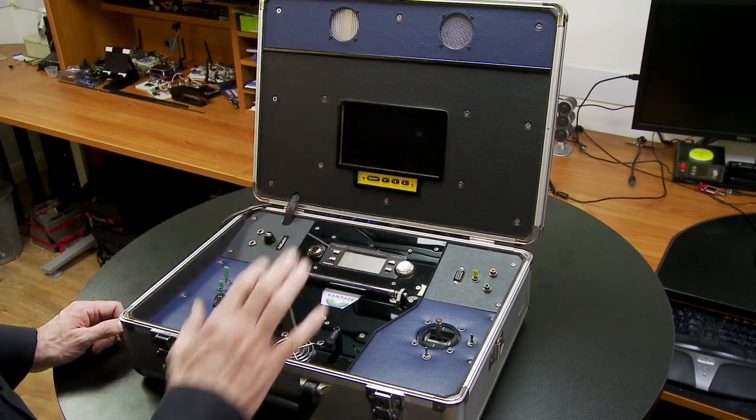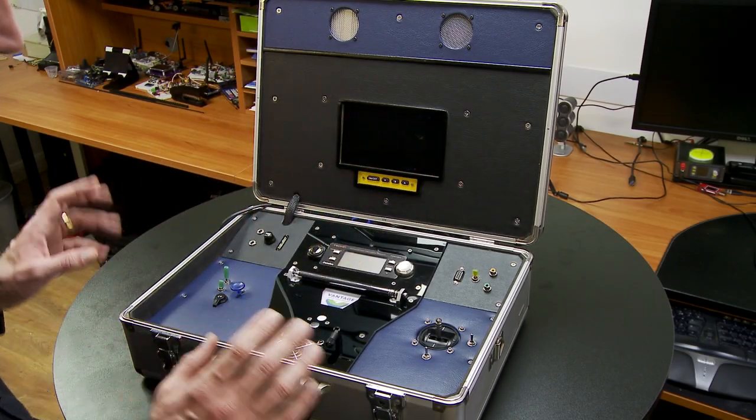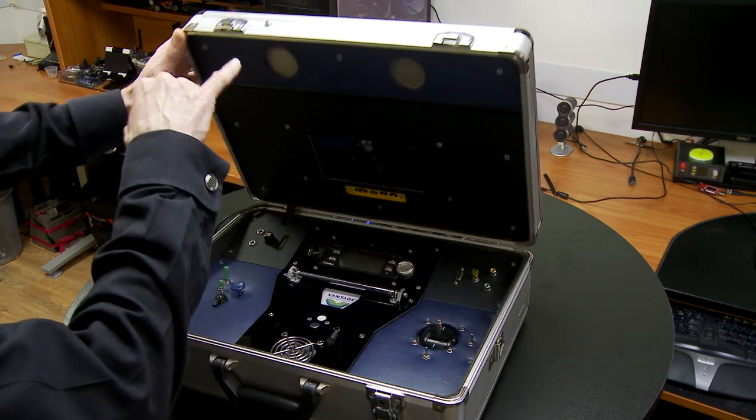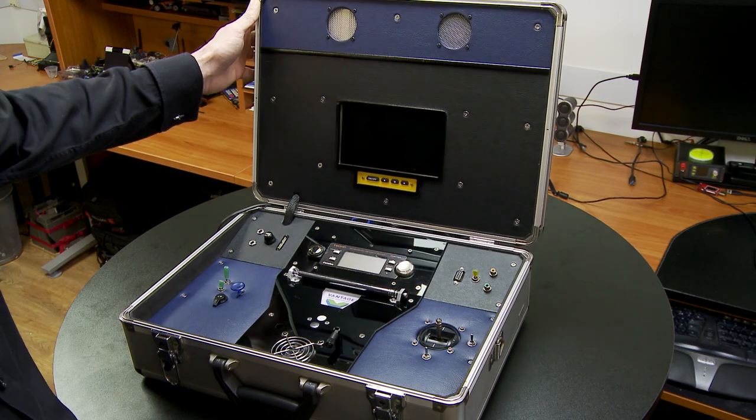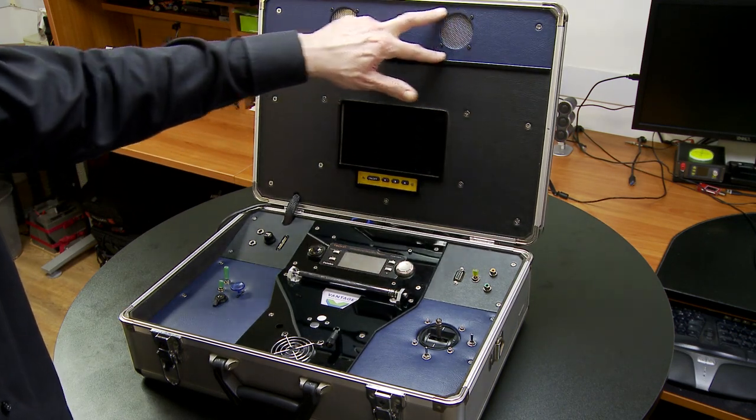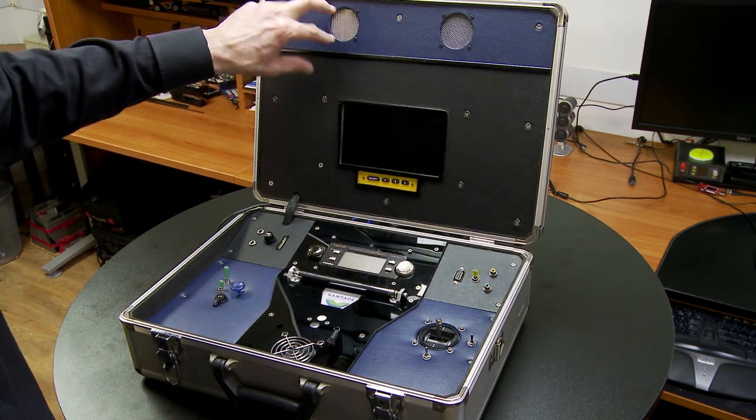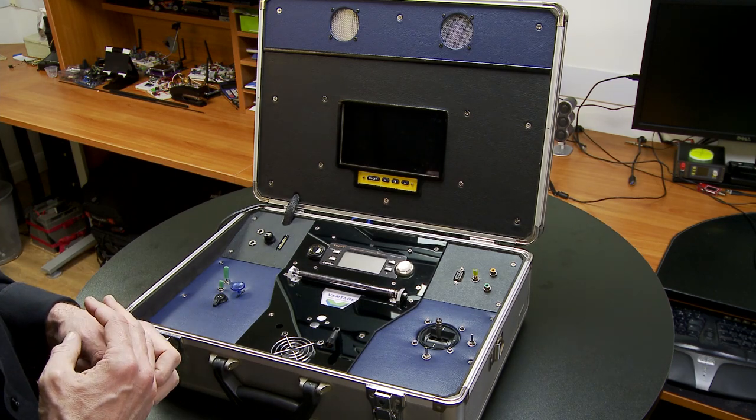First things first I'll give you a quick tour of what we've got going on here so we know what everything is. Starting at the top we've got a 2.4 gigahertz video receiver here, there's the SMA antenna mount. This is a fan which I built a channel inside here which channels the air through and cools the video receiver and it's quite effective.